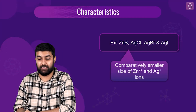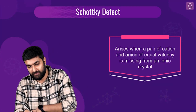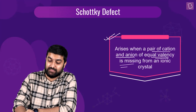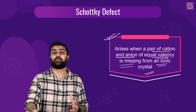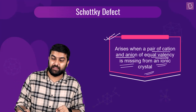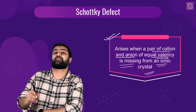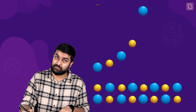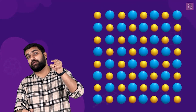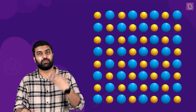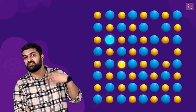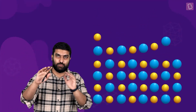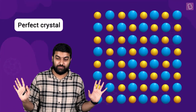Now let's deal with the Schottky defect. It arises when a pair of cation and anion of equal valency is missing from an ionic crystal. This is a vacancy defect in ionic solids. When a vacancy is present, the overall electrical neutrality of the lattice must not be affected — however many positive charges are removed, an equal number of negative charges must be removed as well, so the net charge of the crystal isn't affected.